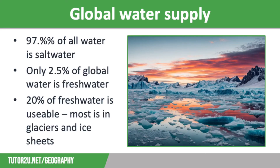Let's start off by thinking about global water supply. 97.5% of all water found on Earth is found in seas and oceans, so it's salt water that can't be used unless it goes through the expensive process of desalination. This means that only 2.5% of global water is fresh water, and in fact only about 20% of that total fresh water is available to use, as the majority of it is in the form of glaciers and ice sheets like you can see on the screen.